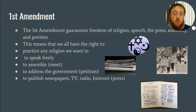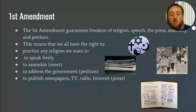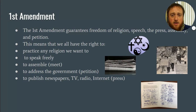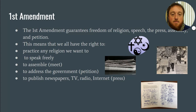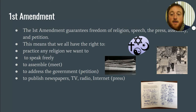The last one is freedom of the press. You're allowed to publish newspapers, TV, radio, internet — whatever you want to do, it's protected under the first amendment. The government cannot control the press in any way. You've seen other countries with state-run news stations and newspapers — that does not happen here. So those are the five parts of the first amendment: religion, speech, press, assembly, and petition.